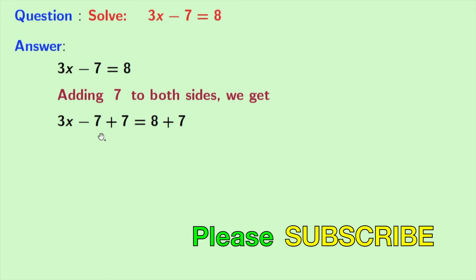Now look, in the left hand side we have 3x, and in the right hand side we have 8 plus 7, and that gives us 15. So we have 3x equals 15 here.